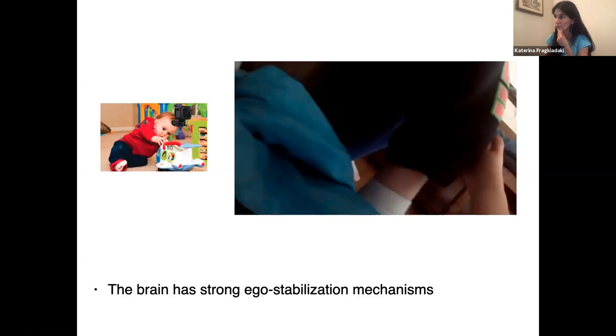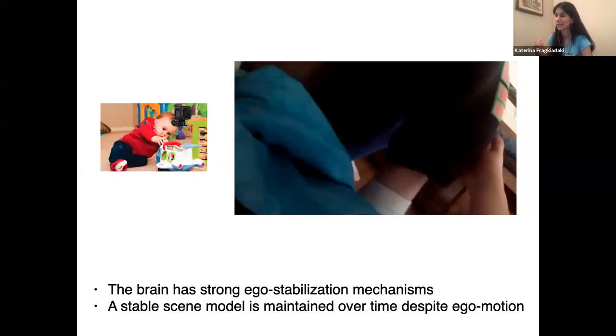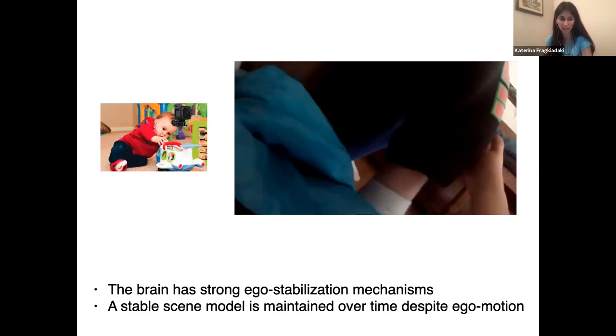We're showing the challenges for recognition from videos where videos are not directed by a human director who has zoomed on an actor, or a human photographer who has taken beautiful pictures. Somehow humans and animals are very good at handling the challenges of mobile visual data, because the brain has very strong ego stabilization mechanisms — not only the human brain, but many animals as well. Despite the camera motion, we always maintain a stable model of the world. The research question is: how can we get videos and build those stable models?